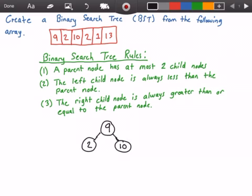So that means we need to place 2 to the right of this node because 2 is greater than or equal to 2, which is our third rule. To the right of 2, we place the value 2.